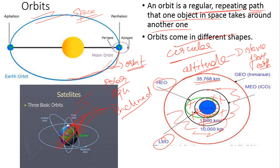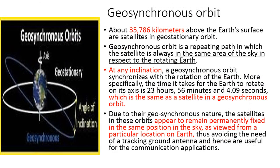So I hope you now have clarity with respect to polar orbit, equatorial orbit, inclined orbit, low earth orbit, medium earth orbit, and high earth orbit. Now we will see about geosynchronous orbit, because you can come across this orbit in newspapers frequently and it is very important for UPSC prelims examination. If a satellite is placed at about 35,786 kilometers above the earth surface, the satellite is said to be in geosynchronous orbit.